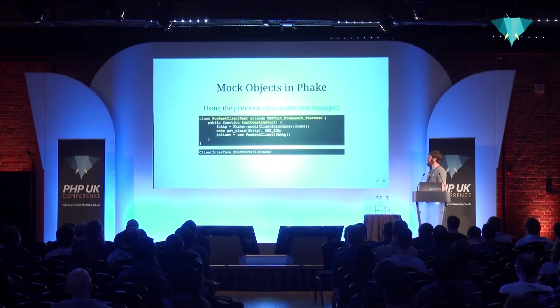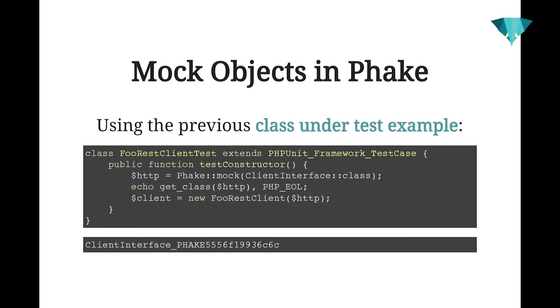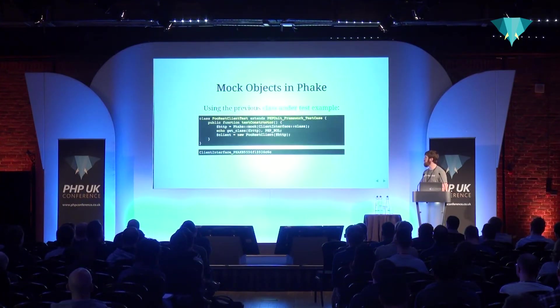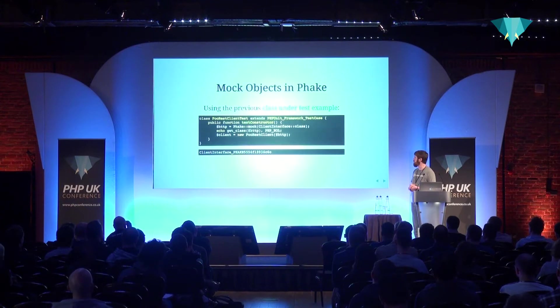This is an example of what mocking an object actually looks like in Fake. Taking my previous example — if I have this REST client that I want to test, I've got this test case and I want to test its constructor to make sure the dependency injection works. I'm calling the mock static method on the Fake class, specifying the class I want to get a mock object of, and then passing it in. You'll see it outputs the class that the mock object is an instance of, which looks like garbage — I'll explain more as we go along why this is the way it is.